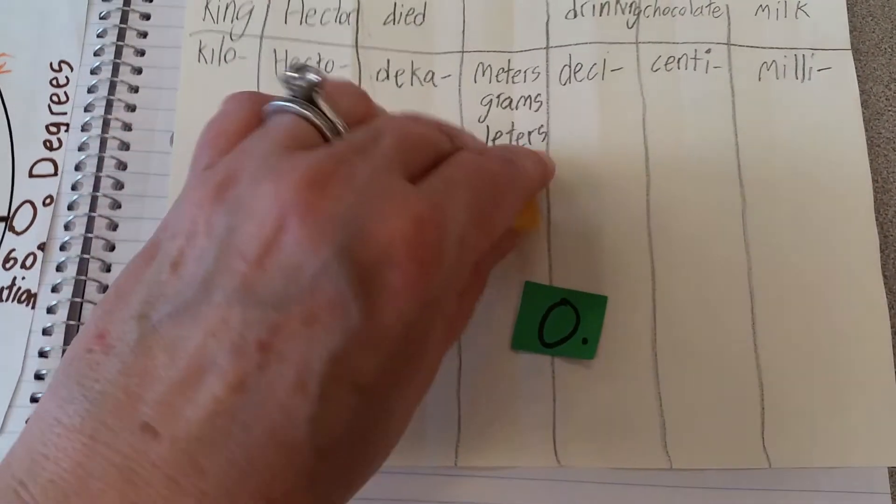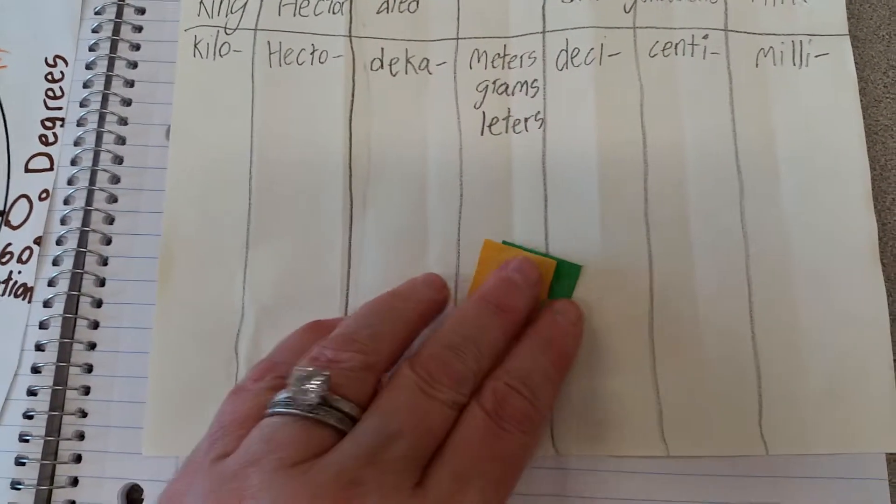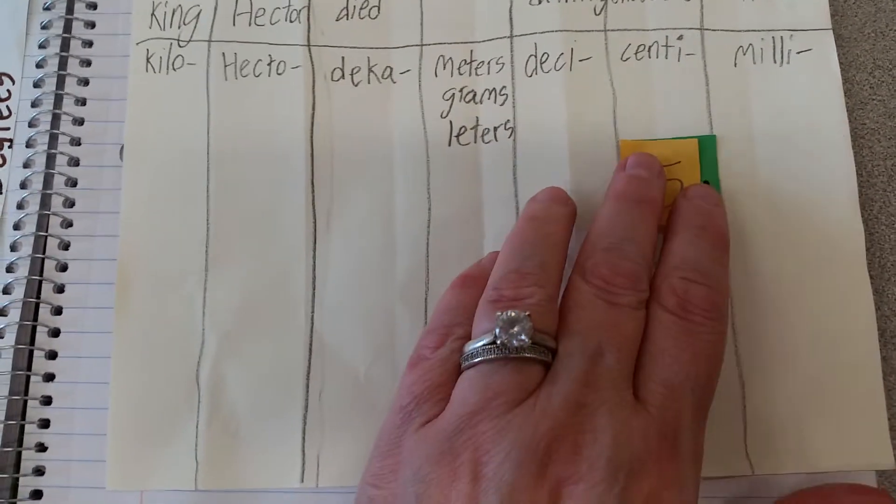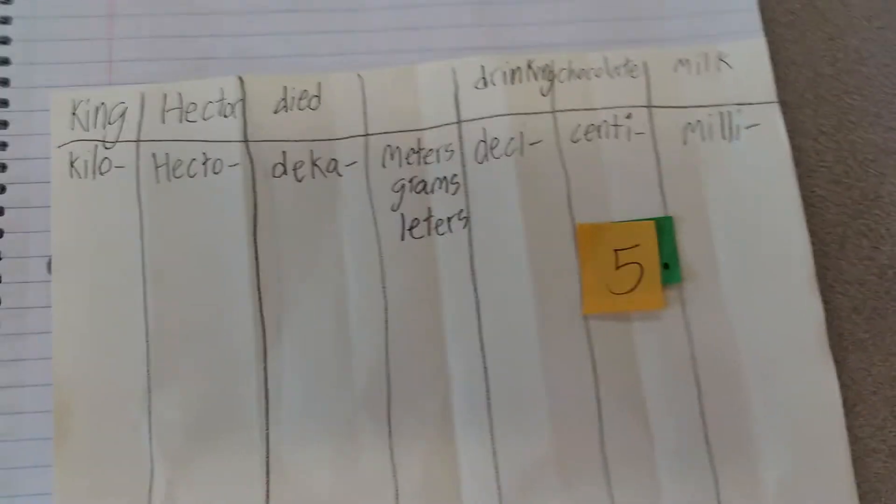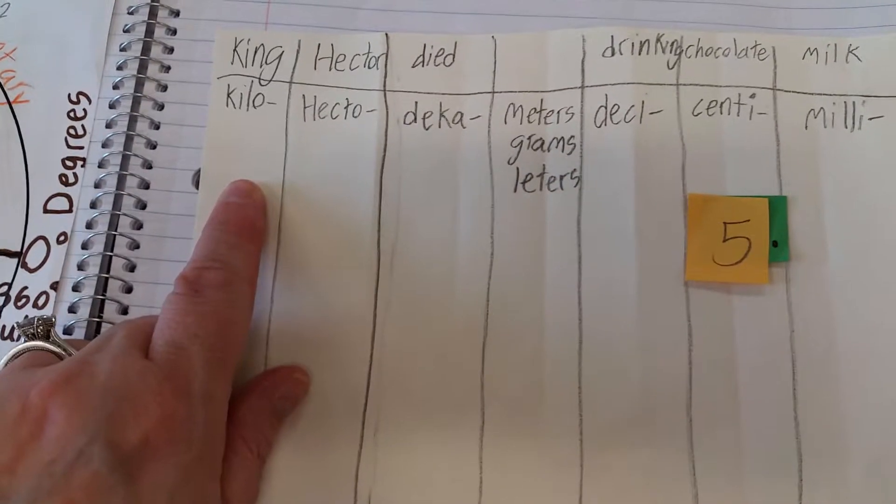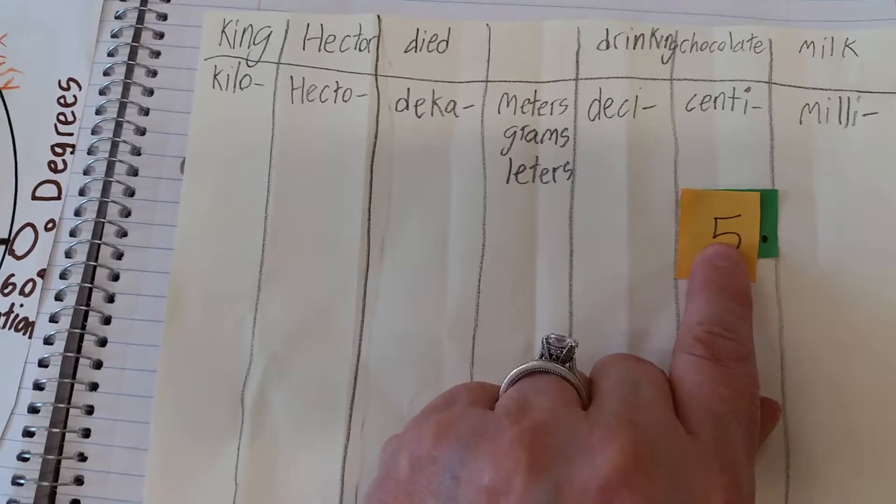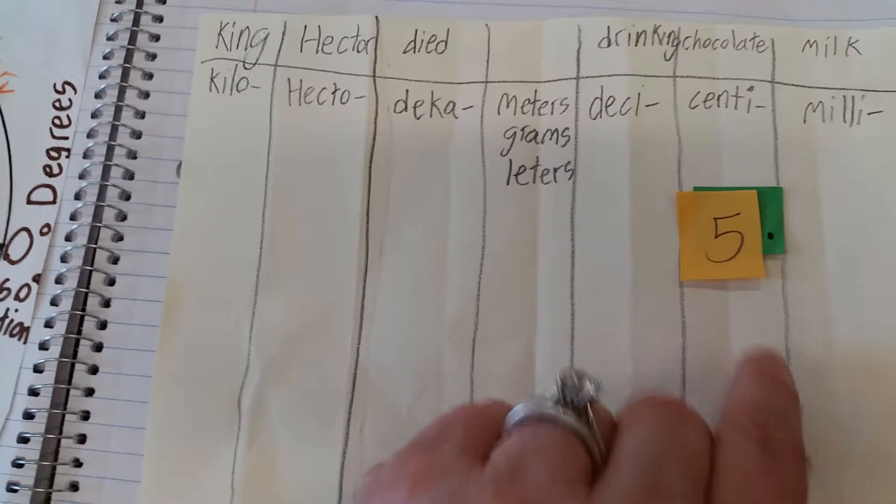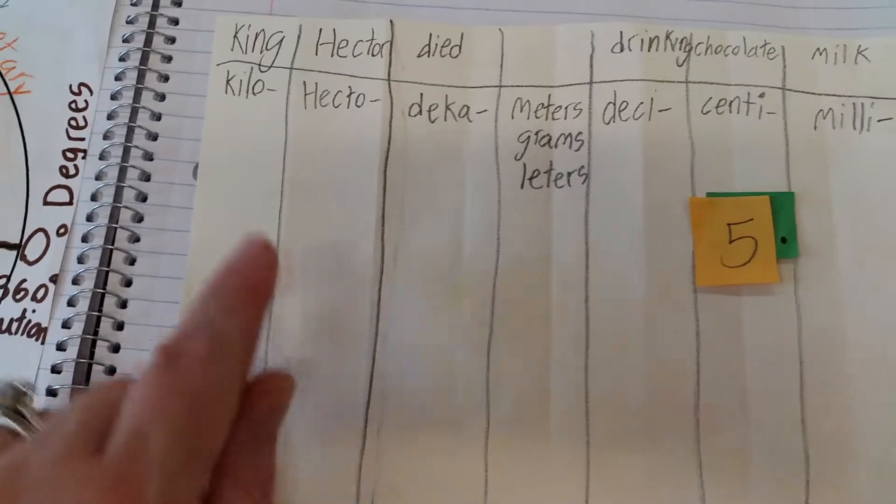It also works going the other way. So let's say I want to turn centimeters into kilometers. Okay, so I'm going to use five again. Five centimeters into kilometers.